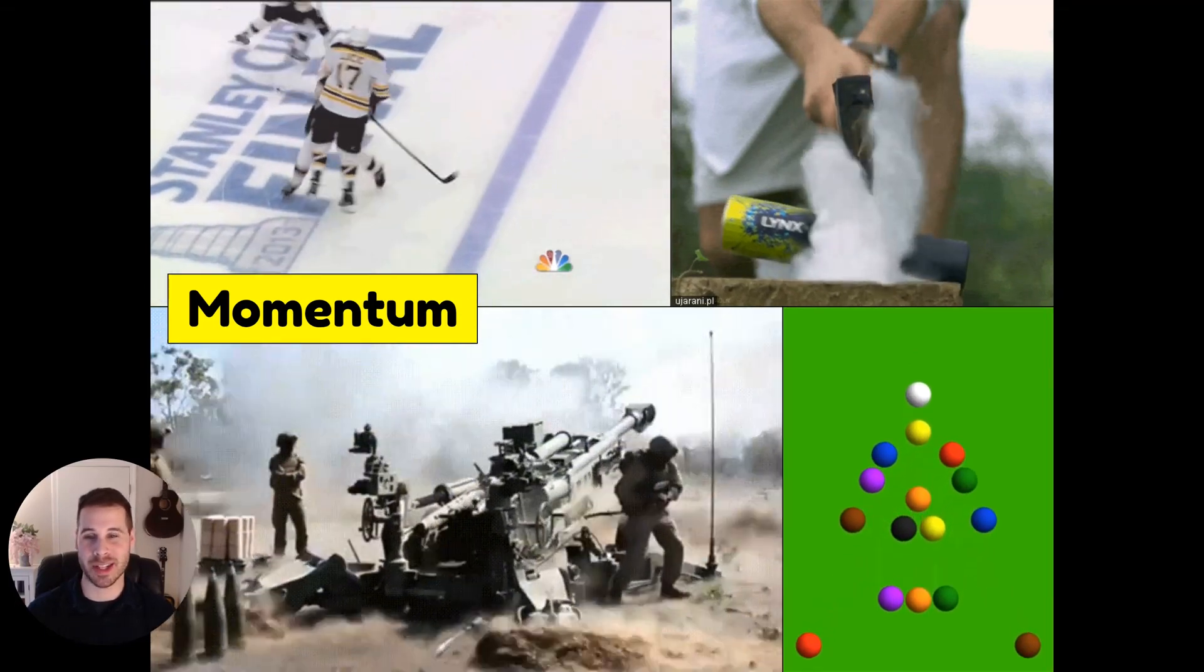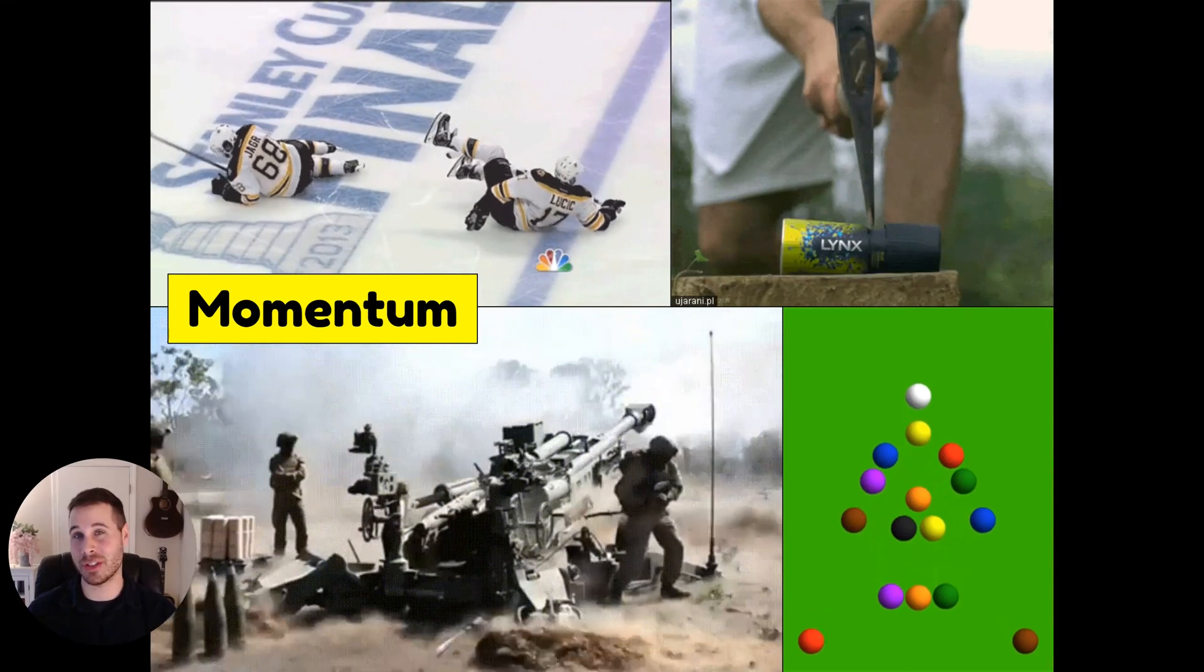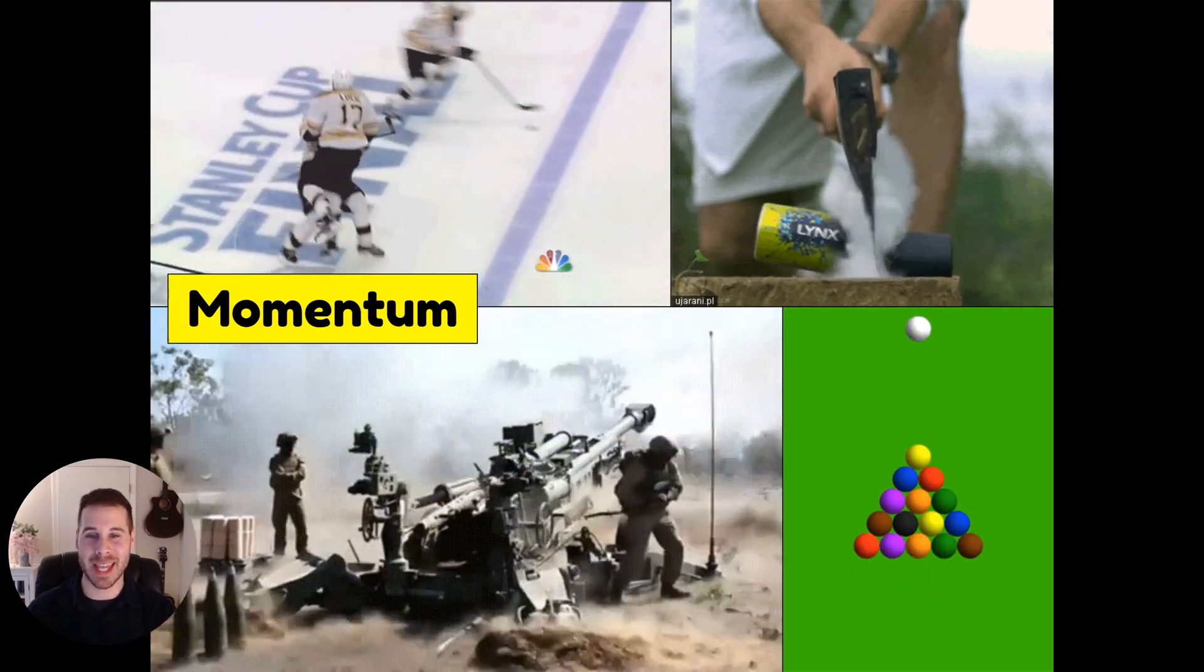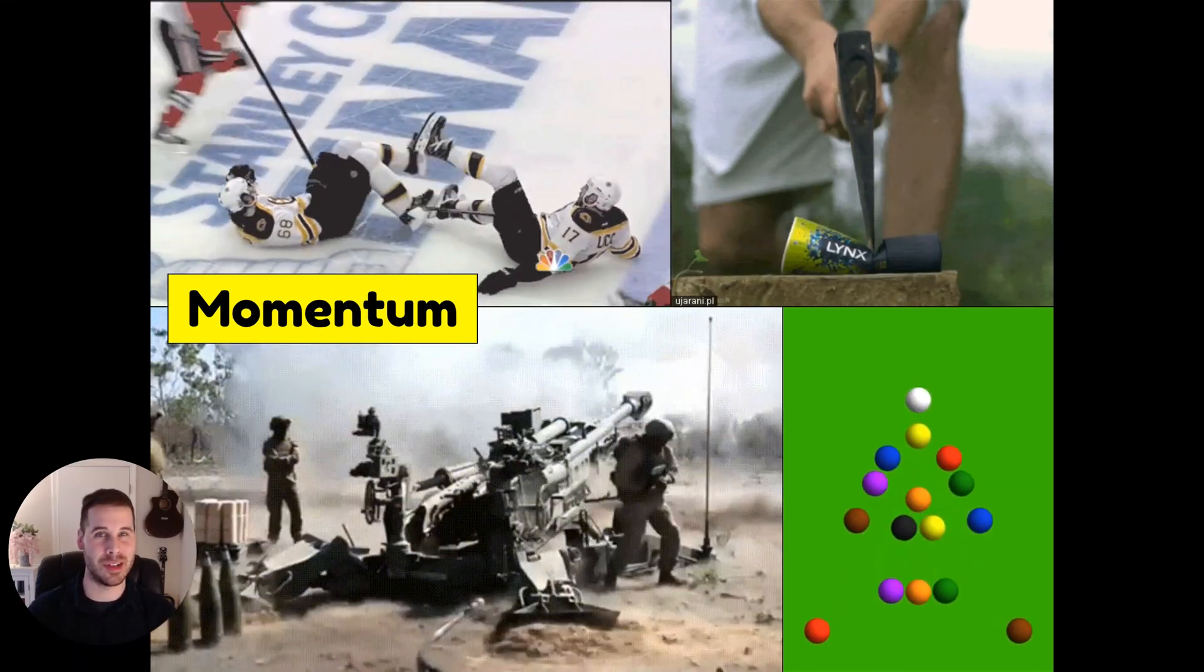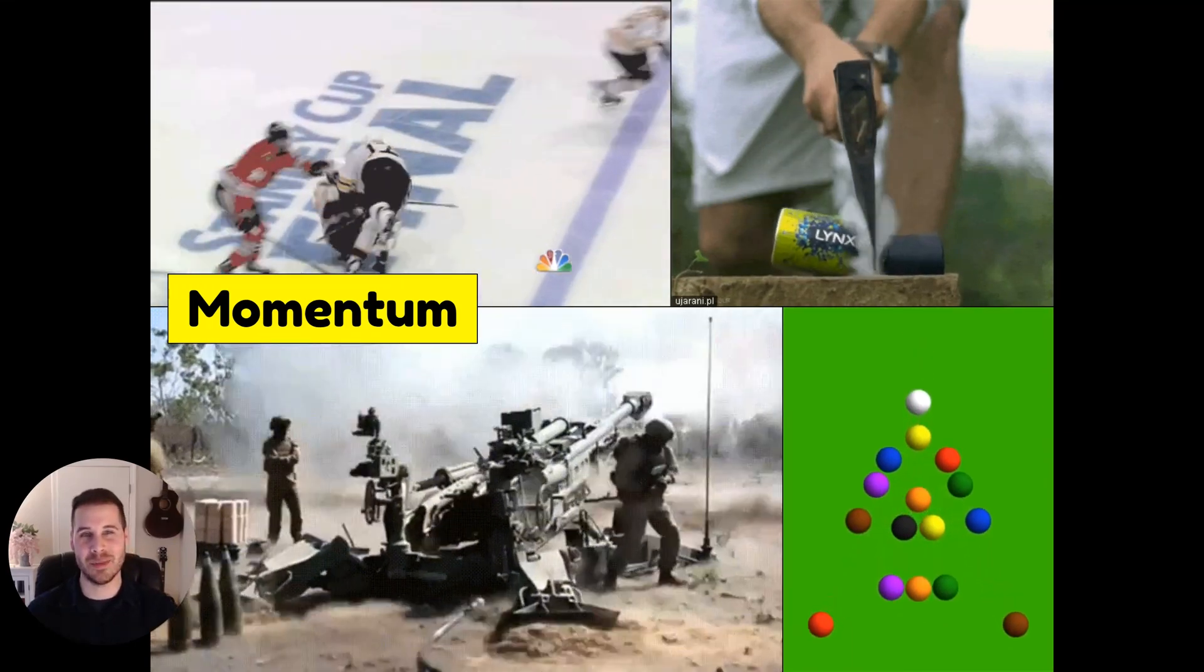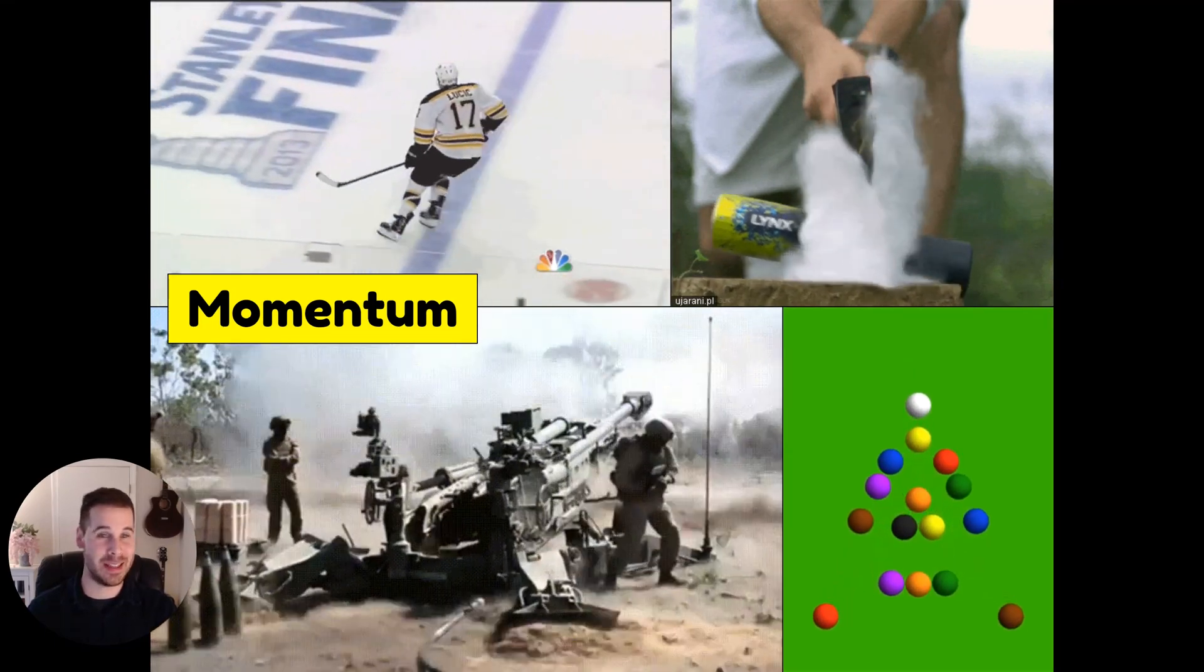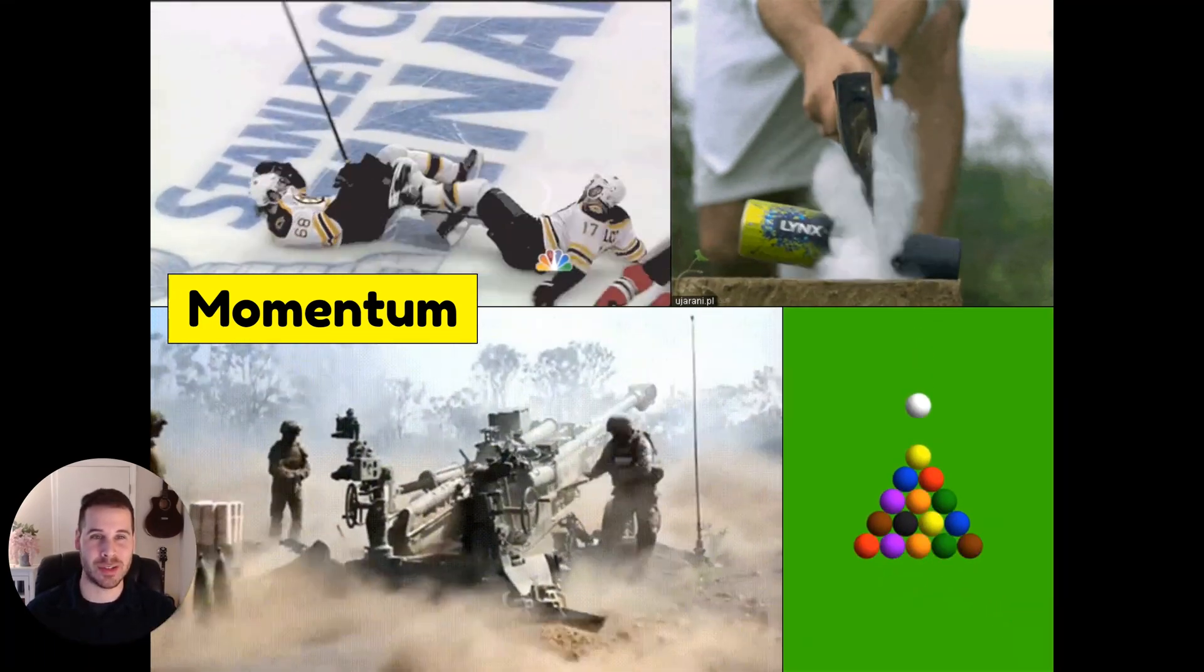In the bottom left-hand corner, there's a cannon firing an artillery shell with a high velocity. As a result of firing the artillery shell, the cannon actually goes backwards. Pretty interesting. And in the top right-hand corner, just like the cannon, someone's taking a hatchet to a bottle of Axe body spray, and the two sides of the bottle are actually going in different directions.